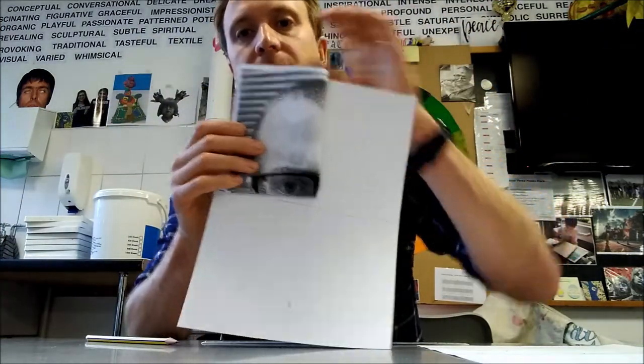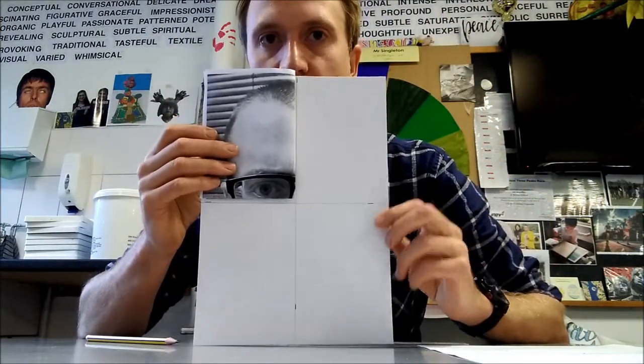Now the next thing you need to do is get your photograph and fold it in half and then fold it in half again. Now you're going to draw each of those quarters inside each of the quarters that you've just created.